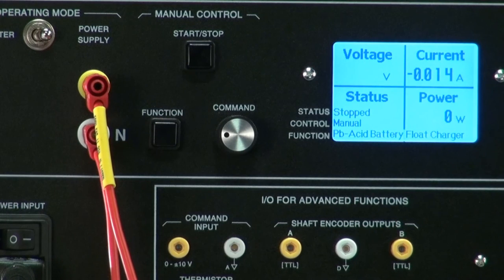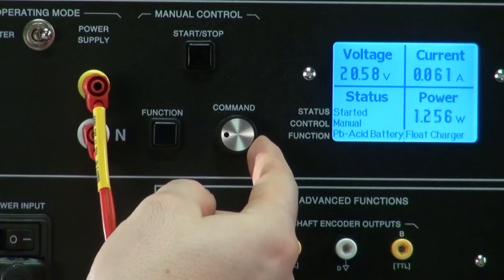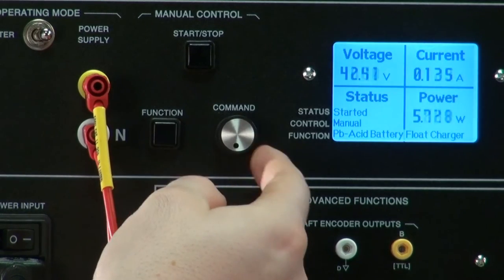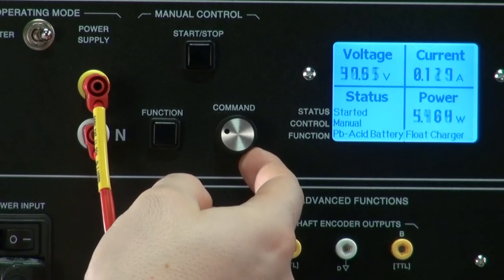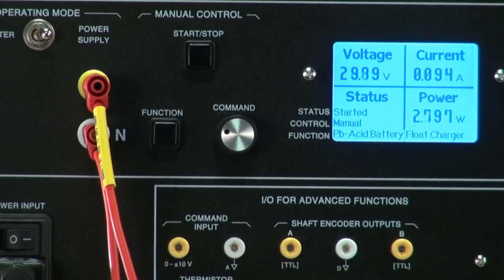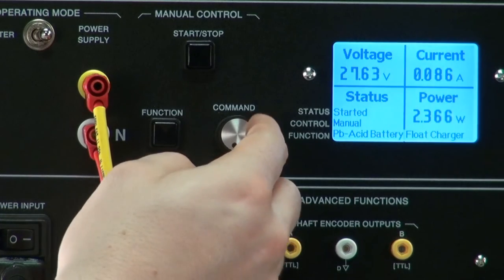Lead acid battery float charger. This function uses the four-quadrant power supply to implement a lead acid battery float charger. It applies a constant voltage specified by the user to a battery pack. It is very useful to charge a set of batteries connected in parallel overnight, so they are ready for the next lab session.